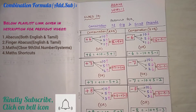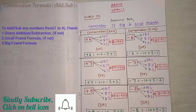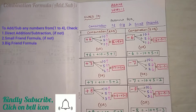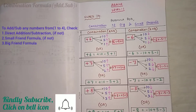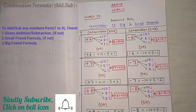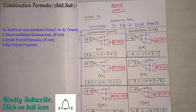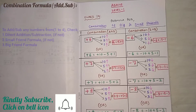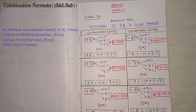Already we have seen that for adding or subtracting any numbers from 1 to 4, first check if direct addition or subtraction is possible. If it is not possible, second we should check the small friend concept. If small friend is also not possible, then we can check the help of big friend. That condition is for adding or subtracting the numbers from 1 to 4. Up to 4 is completed.